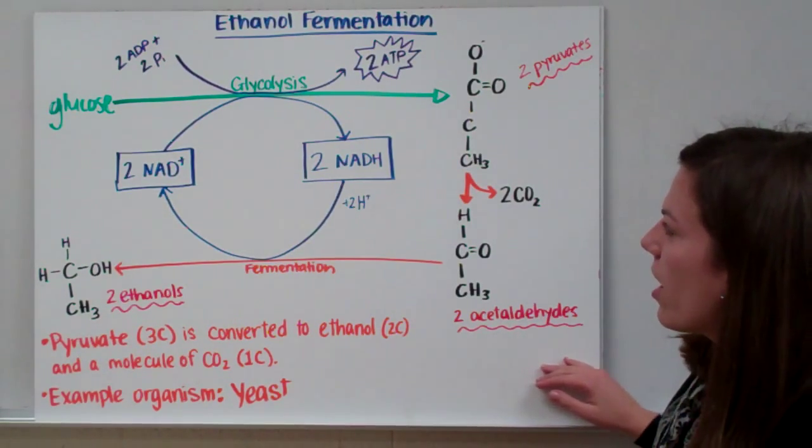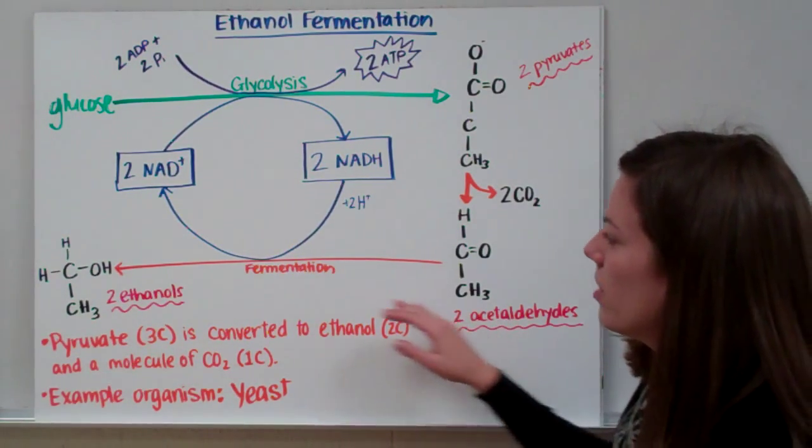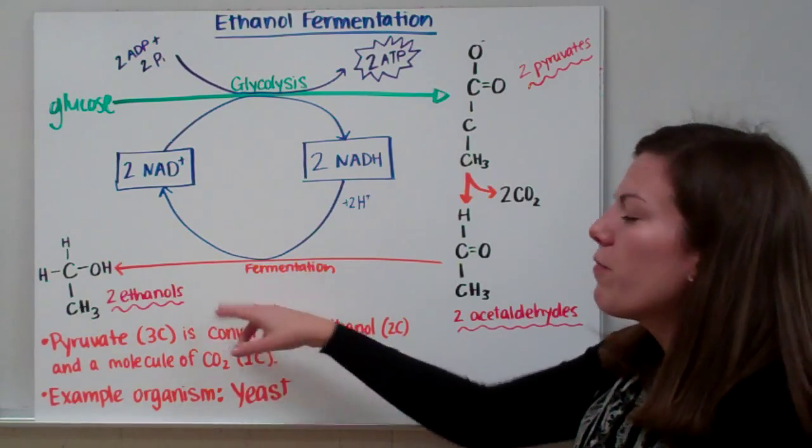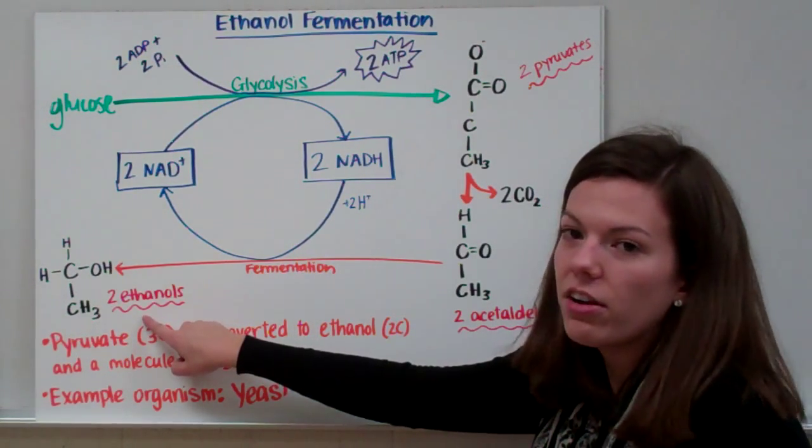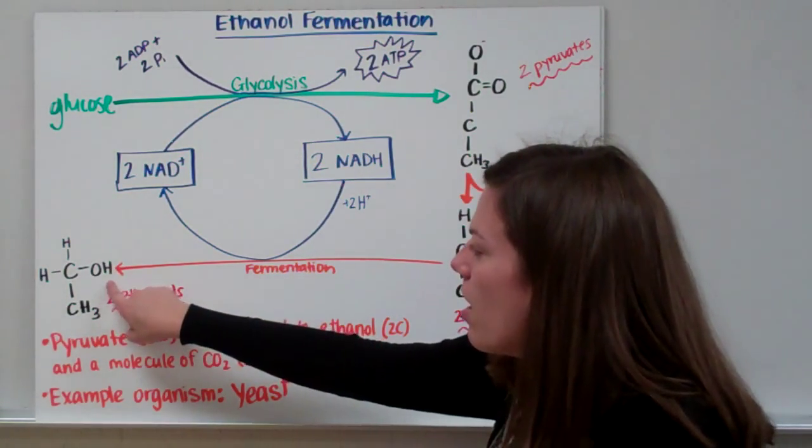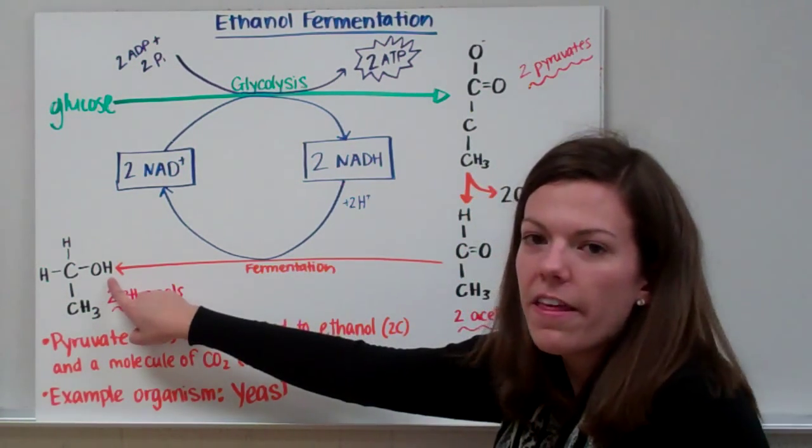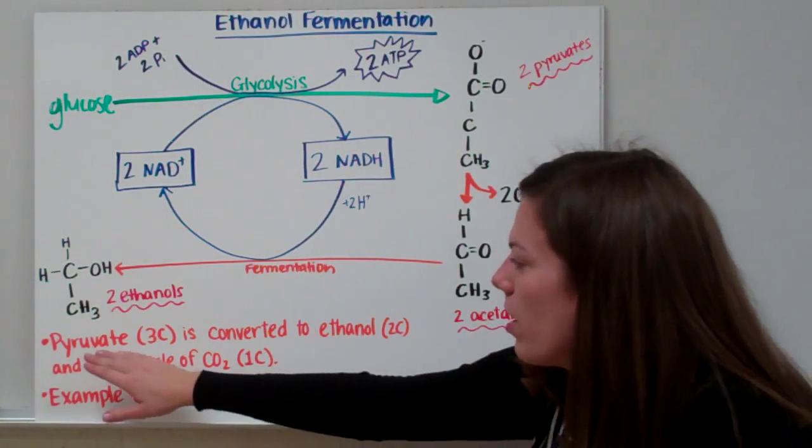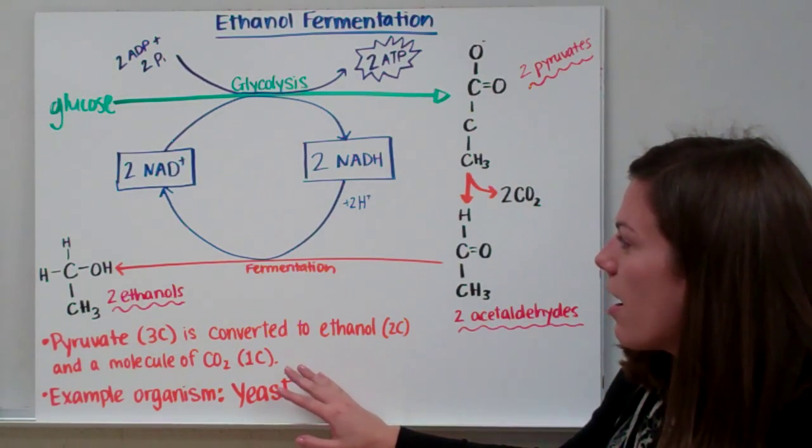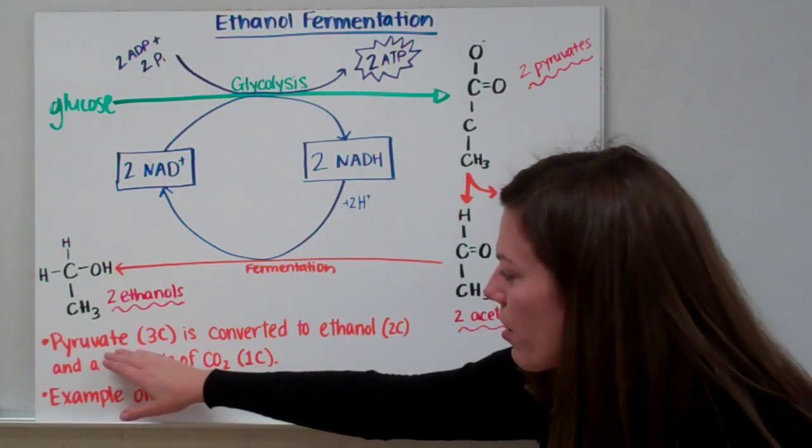Then we take those two acetaldehyde through ethanol fermentation and we further rearrange the compounds, and we change those acetaldehyde into ethanol. And you'll notice that we have this hydroxyl group, the OH. That is a signal that we're talking about alcohol right here. So basically, in our ethanol fermentation, we're taking pyruvate.